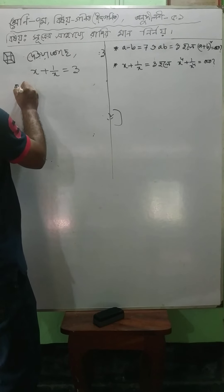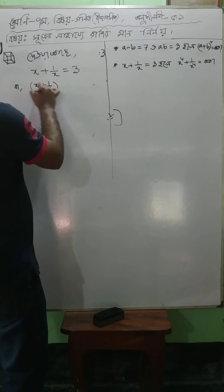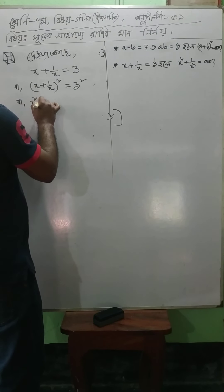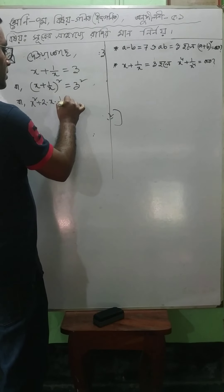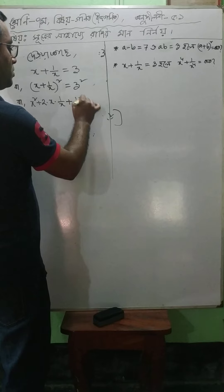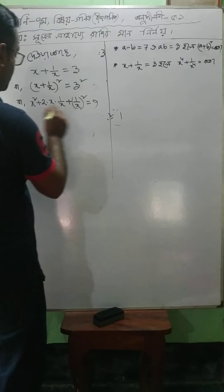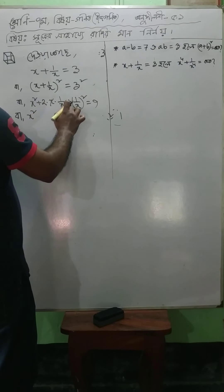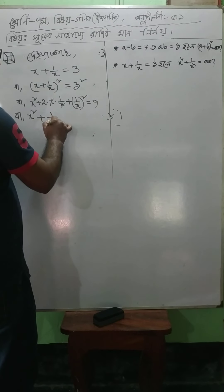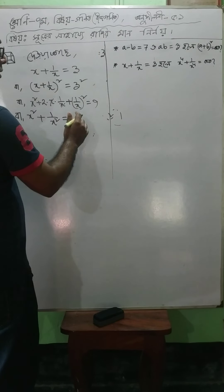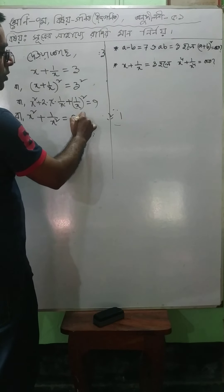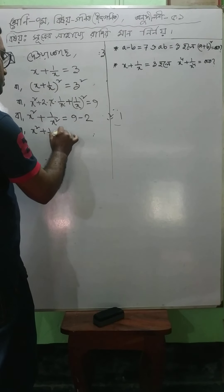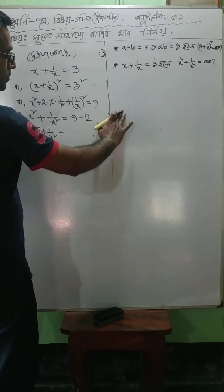Let's take a look at this. x plus 1 by x, whole square is 3 squared. This is a squared plus 2ab plus b squared. x squared plus 2 times x times 1 by x plus 1 by x squared is equal to 9. So, x squared plus 1 by x squared is equal to 7.